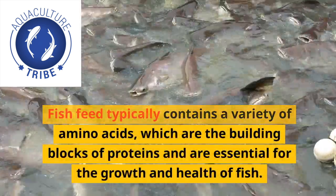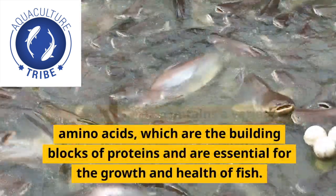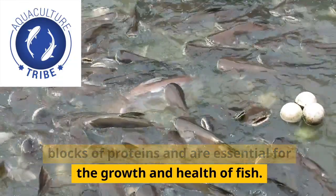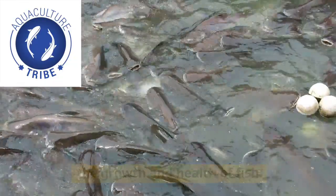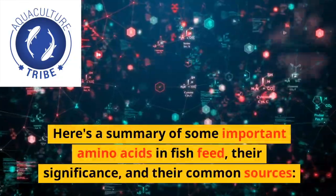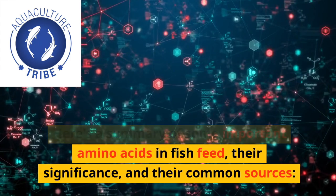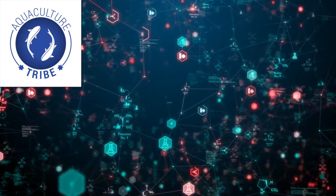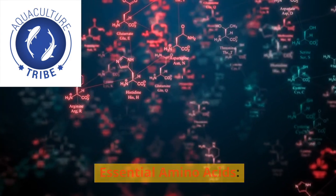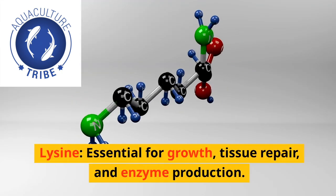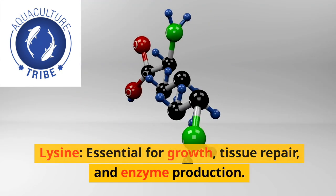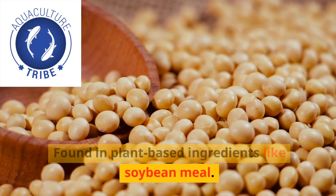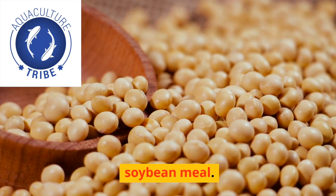Fish feed typically contains a variety of amino acids, which are the building blocks of proteins and are essential for the growth and health of fish. Here is a summary of some important amino acids in fish feed, their significance, and their common sources. Essential amino acids: lysine is essential for growth, tissue repair, and enzyme production, found in plant-based ingredients like soybean meal.